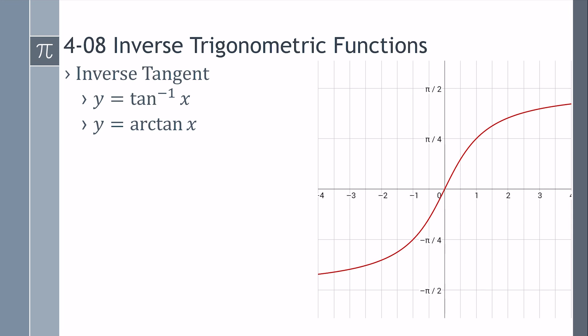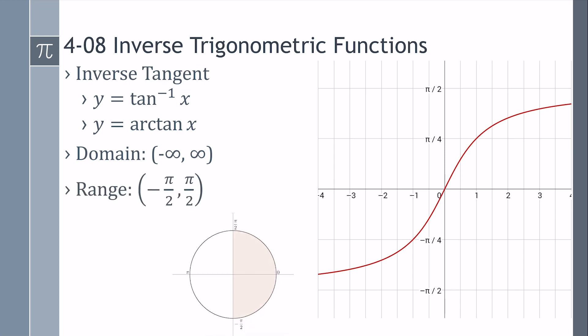Now, inverse tangent. It's written as tangent to the negative 1, or arc tangent — both mean the same thing. Looking at the graph, it's just one section so that it's a function. The domain goes from negative infinity to positive infinity. The range goes from negative pi over 2 to positive pi over 2, because these are where the asymptotes would be for tangent. This gives you an answer in quadrants 1 and 4, so inverse tangent gives you an angle in quadrant 1 or quadrant 4 only.